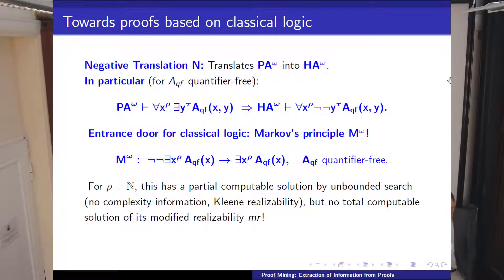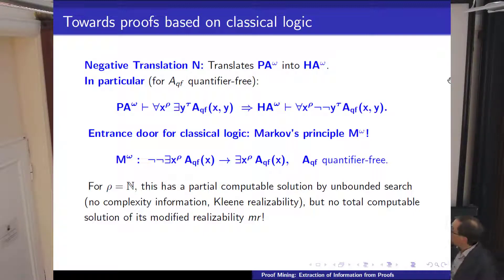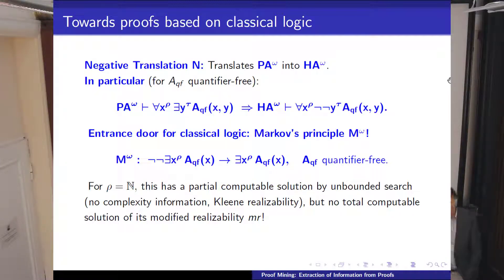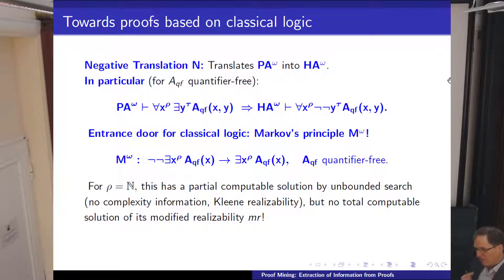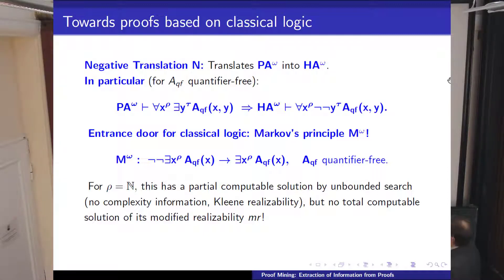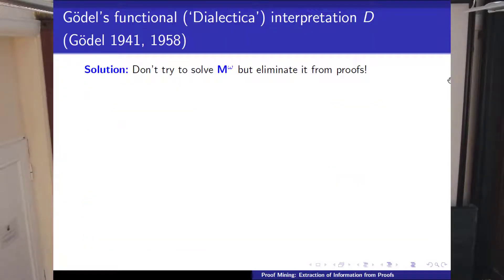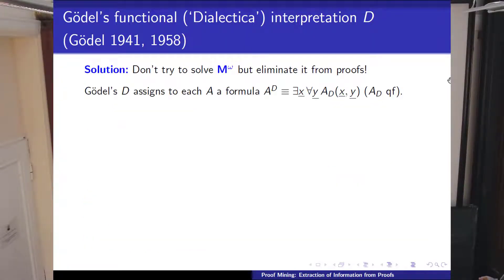In contrast to Kleene realizability, we don't give a semantics to the Markov principle—which wouldn't hold for higher types anyway, because how can we search for the least functional of type two? Instead, we eliminate the use of this principle by making a much harder task: we provide much more information so that the Markov principle becomes superfluous. And that's what the Gödel dialectica interpretation does in a miraculous way.